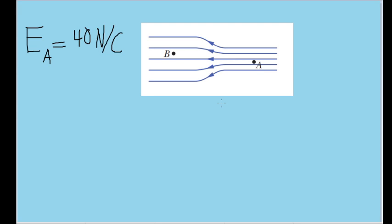We are asked to find the magnitude of the force on a proton at point A. We know that the electric force on a charge due to an electric field is equal to the charge on the particle within the field times the vector value of the electric field at that point. We are only asked to find a magnitude, but since this is a vector equation, I'll still treat it as one for just a moment.